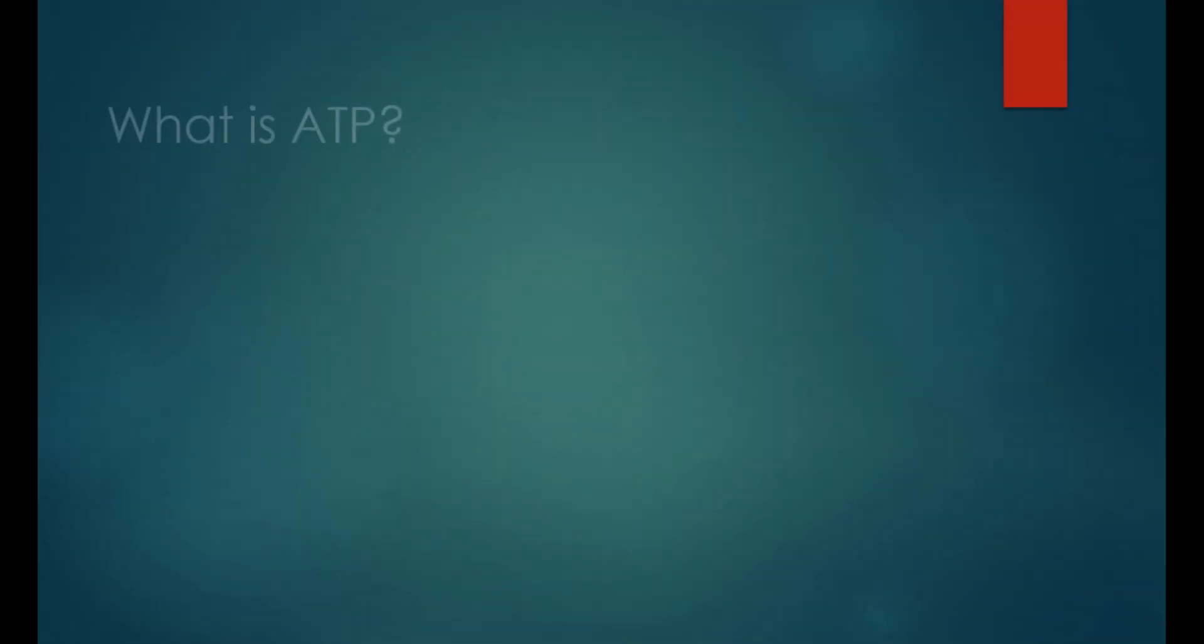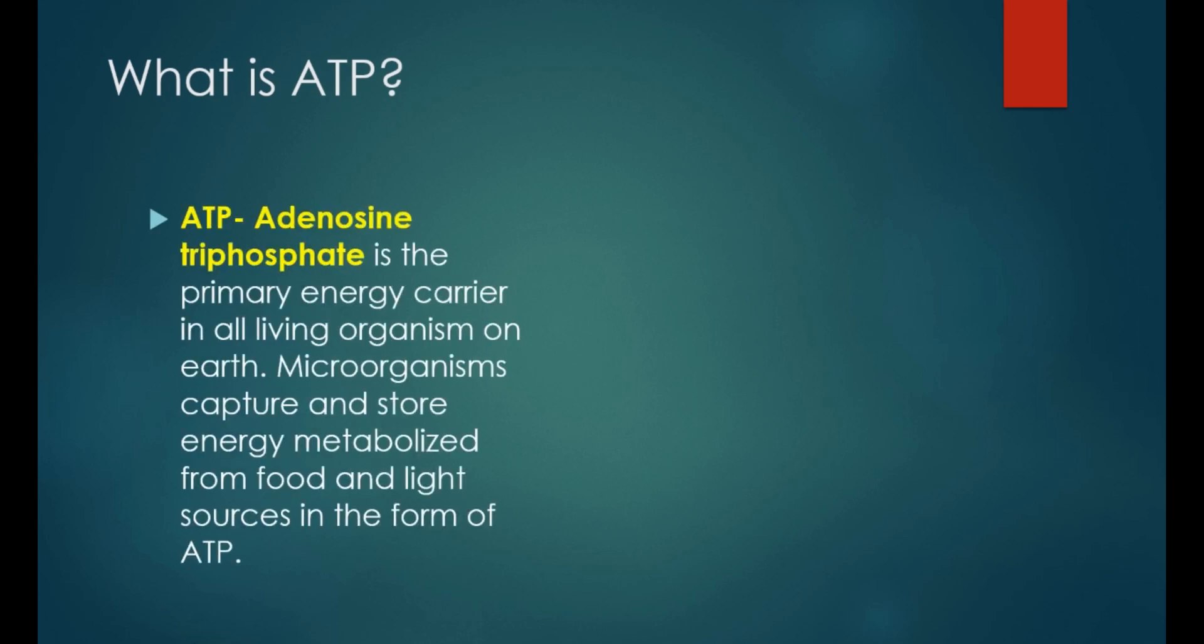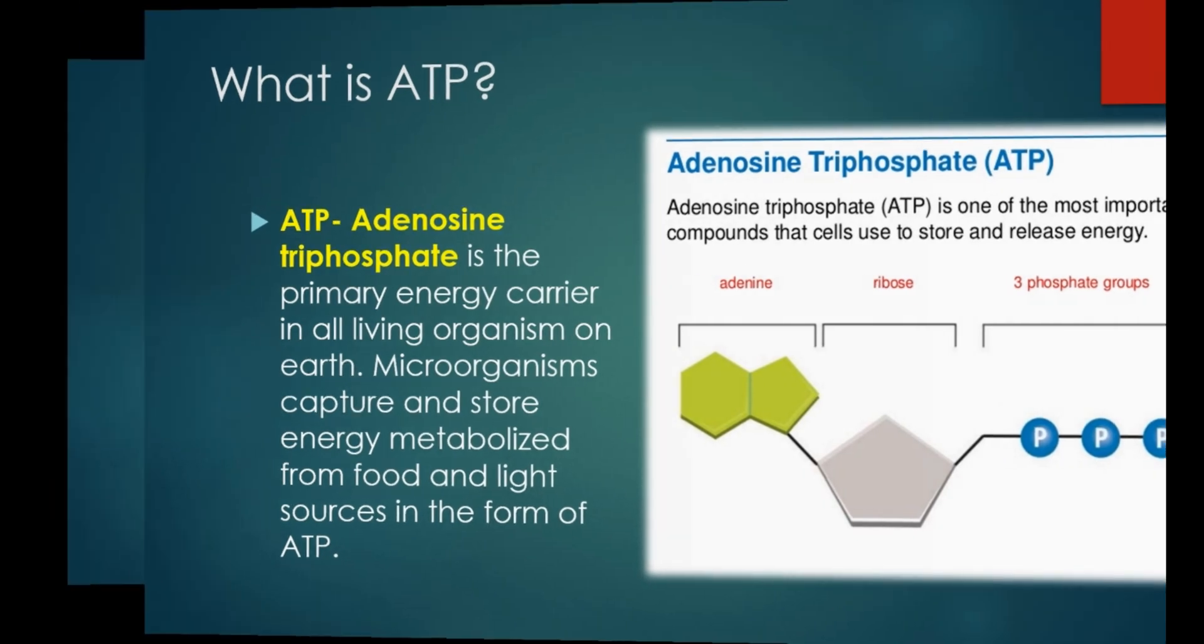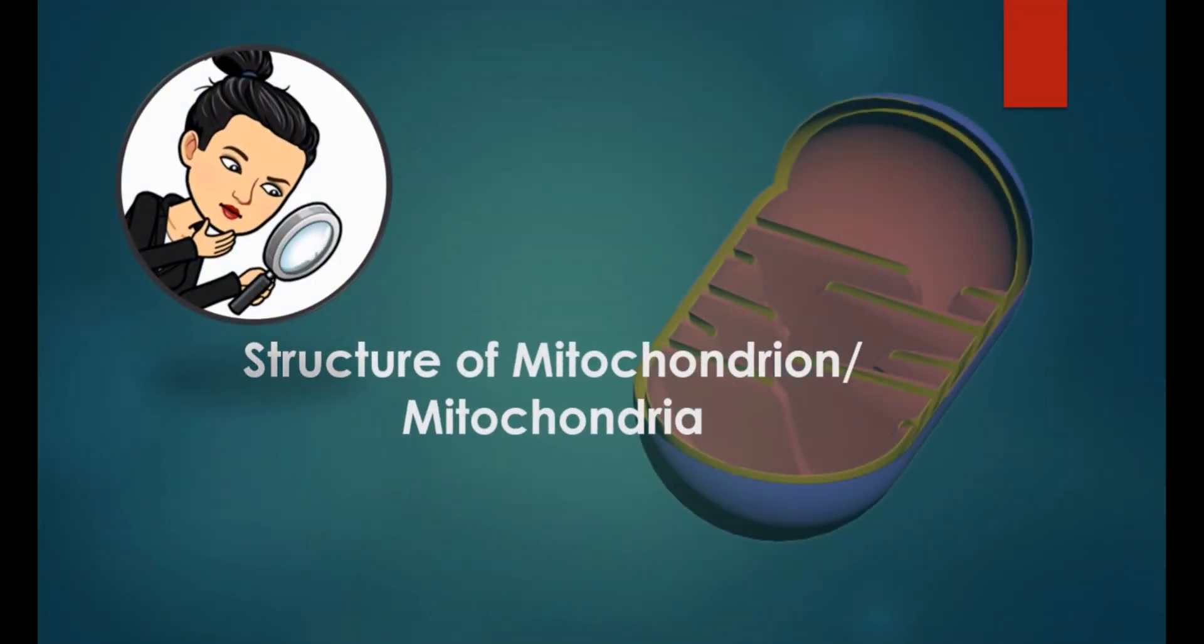What is ATP? Adenine triphosphate is the primary energy carrier in all living organisms on earth. Now the process of breaking down food molecules, primarily glucose, is done in the mitochondrion. So let's study its structure and how they fit in cellular respiration.